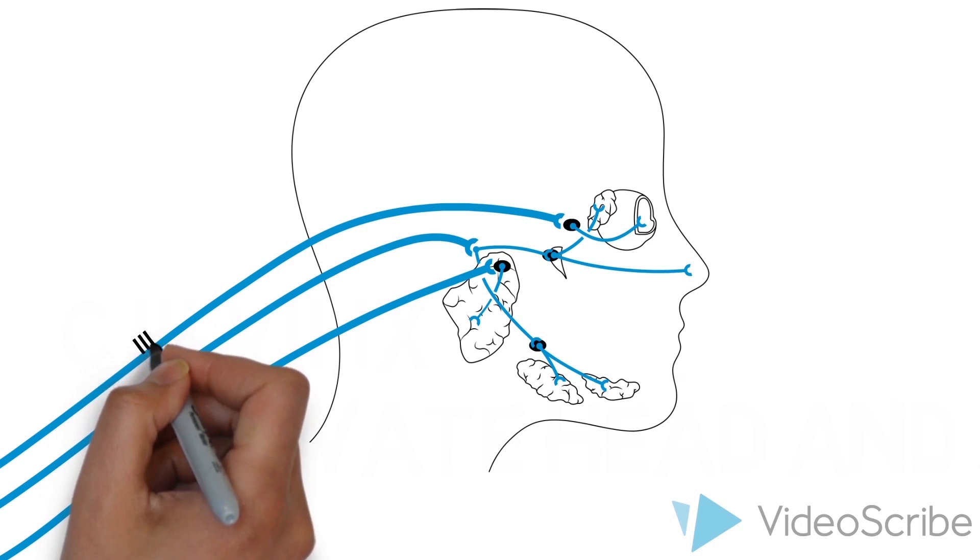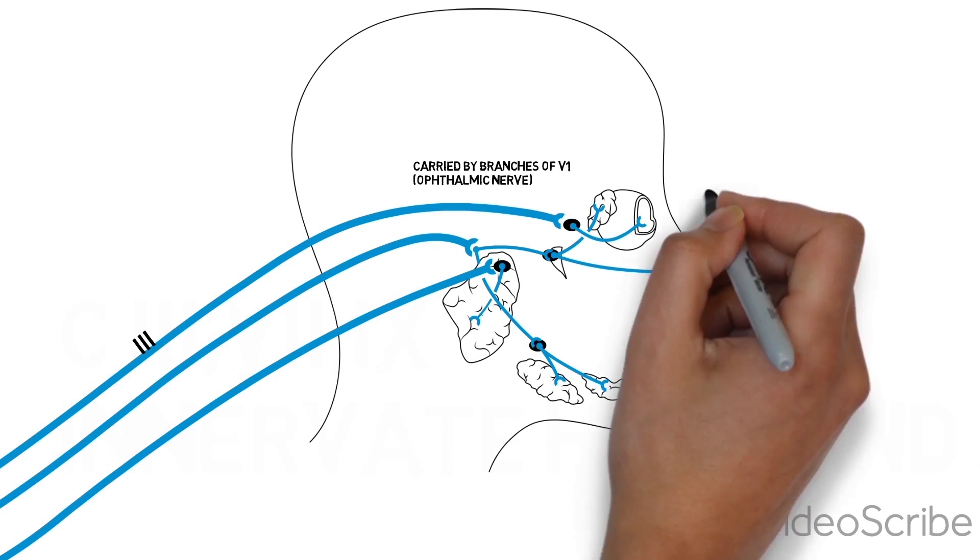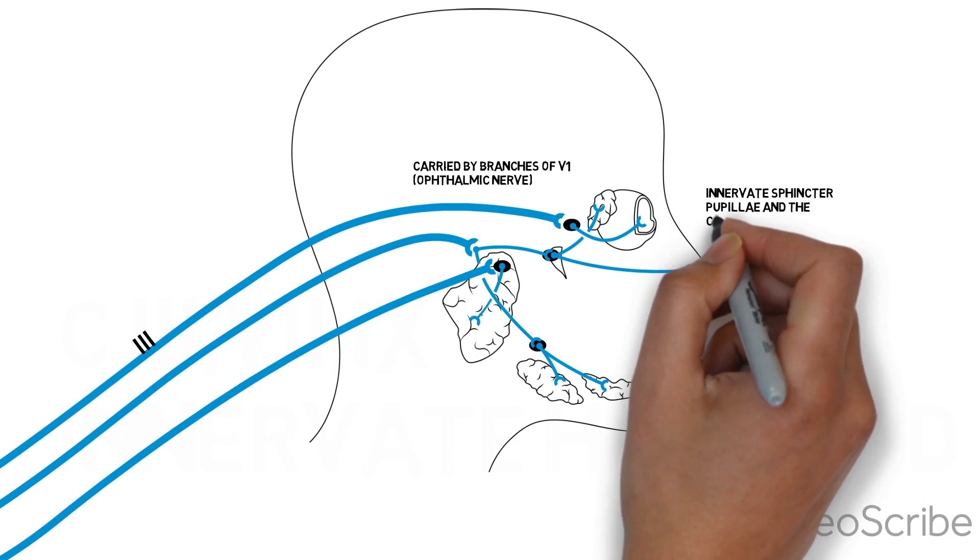Parasympathetic fibers in 3 are carried by branches of V1, or the ophthalmic nerve, that enter the eyeball and innervate sphincter pupillae and the ciliary muscles.